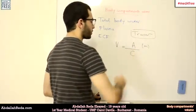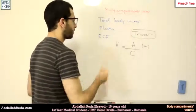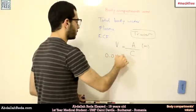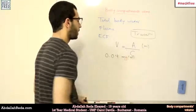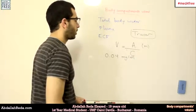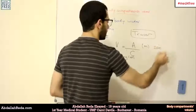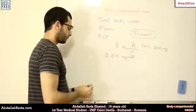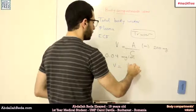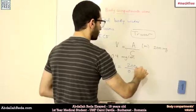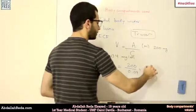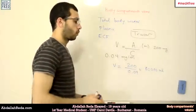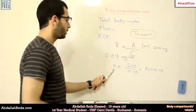divided by the concentration of the fluid. For example, if we have a fluid with a concentration of 0.04 milligrams per milliliter and we inject 200 milligrams of the tracer, then V equals 200 divided by 0.04, giving us 5,000 milliliters. This is how the tracer method works.